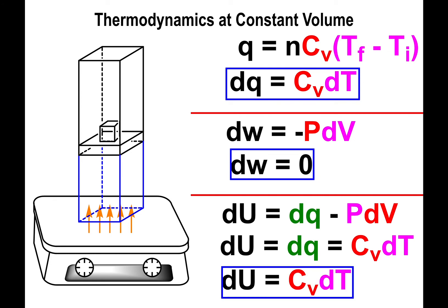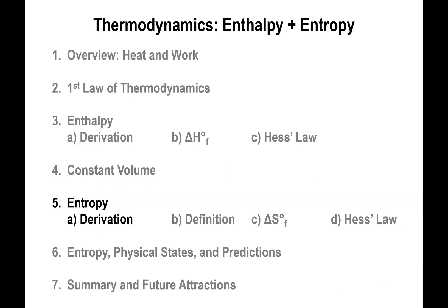This particular feature — that the internal energy is given by the heat capacity at constant volume times the change in temperature — is something I'm going to exploit to derive the next thermodynamic parameter known as entropy. This is the first time you get to see it, so it's kind of a treat to see where this comes from.